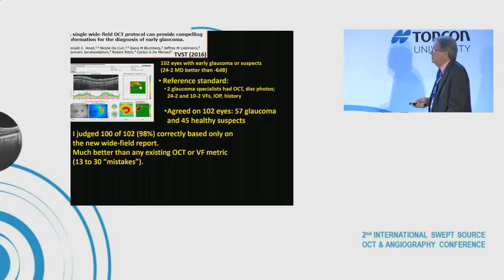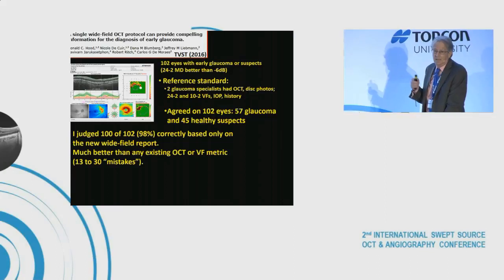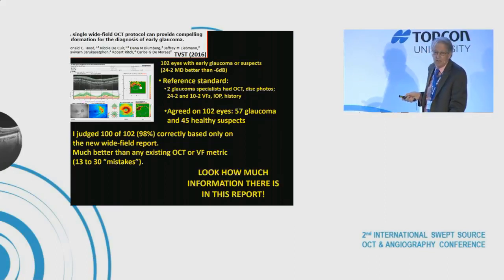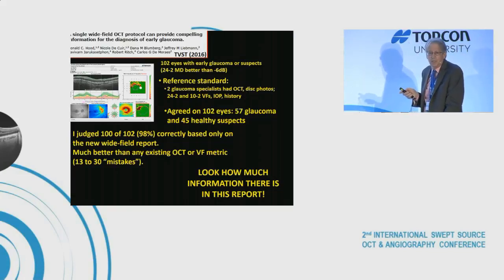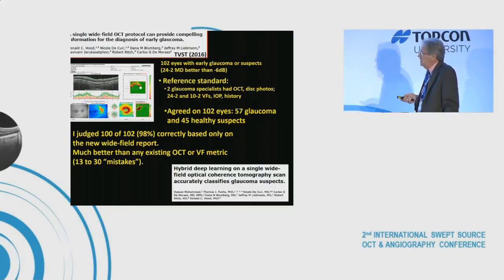The metrics — quadrant thickness, average thickness, mean deviation, pattern standard deviation — none performed better than 13 mistakes. The point is not how good I am, but how much information is contained in this report. Since that information is present, we were optimistic we could apply artificial intelligence instead of relying on metrics.